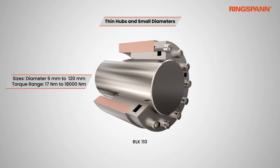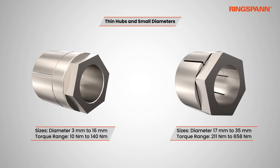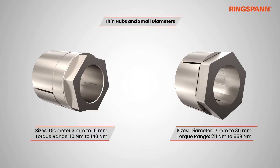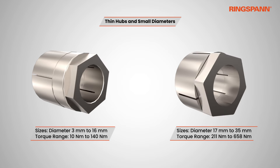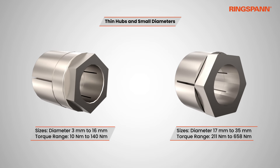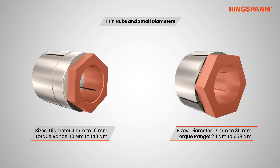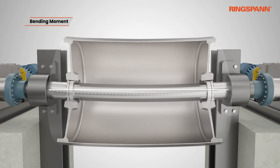Ringspan offers our RLK 110 series for thin hub connections. For small shaft diameters, Ringspan also offers its Trantorque clamping elements, which ensures excellent concentricity and easy assembly by only tightening one central nut.